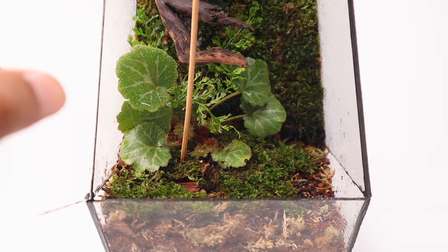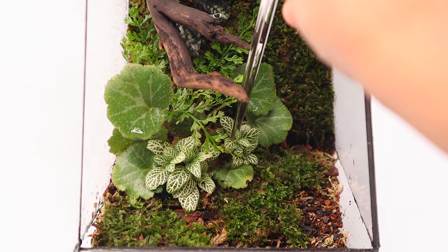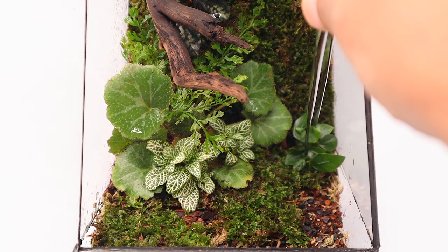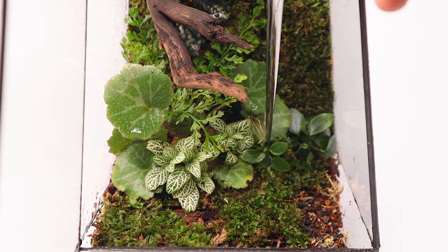I am using a skewer to make a hole in the soil in which I plant fittonia green cuttings. This plant will add some texture in the foreground. This is followed by two anubias plants which I place alongside the begonia on the right of the enclosure.